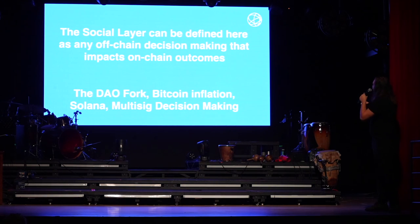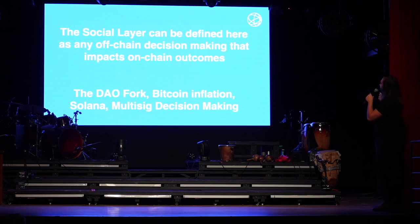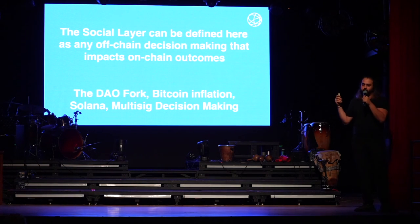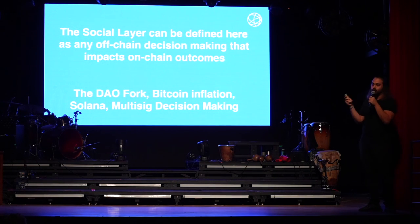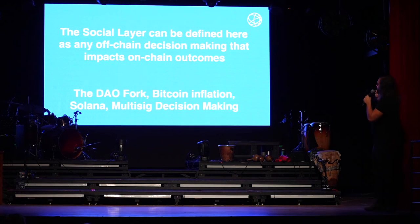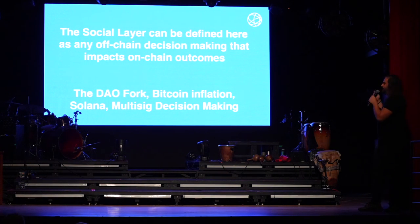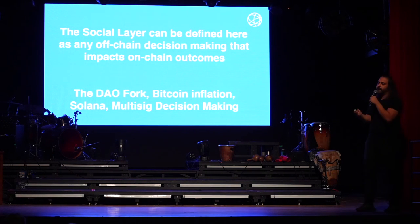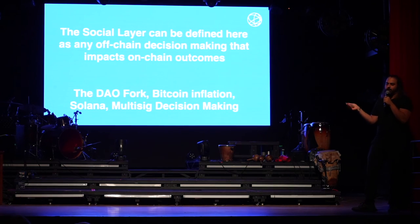Briefly talking about the social layer - my own definition is it's any off-chain decision making that impacts on-chain outcomes. The DAO hack wasn't first resolved on-chain; there was a lot of consensus on the social layer with people discussing what to do. With the Bitcoin inflation bug, miners had to coordinate and decide on the fork choice rule. Solana, when they went through consensus bugs that halted the chain, their validators still decided to restart the network - that's the social layer. Multi-sig decision making is another example. If you've ever participated in a DAO, most decision making happens on the social layer - on-chain voting is only a formality.